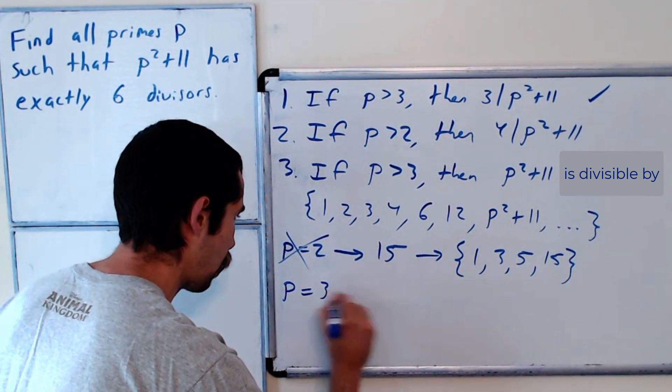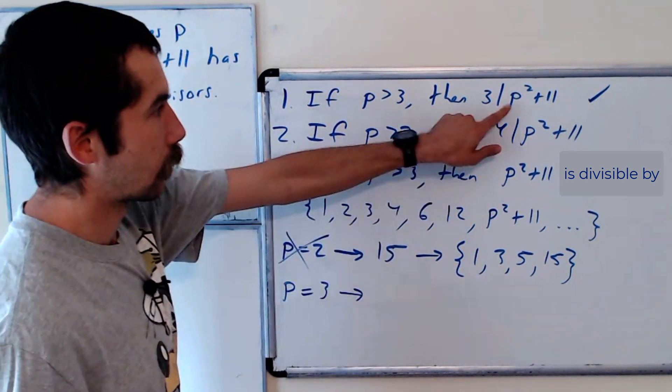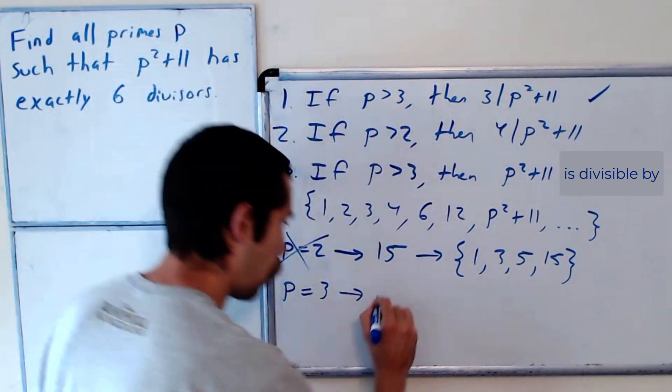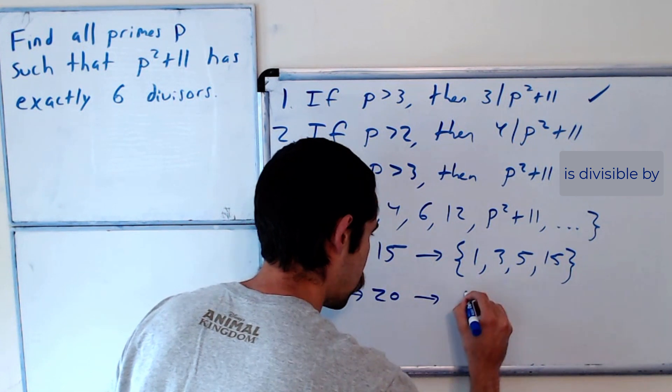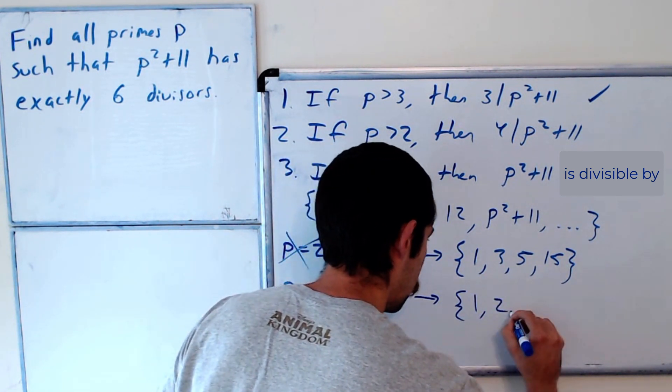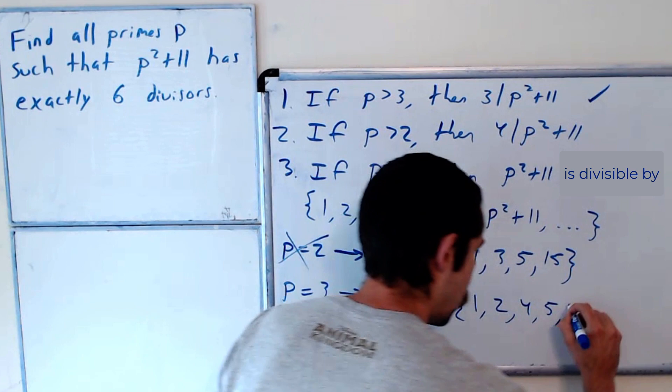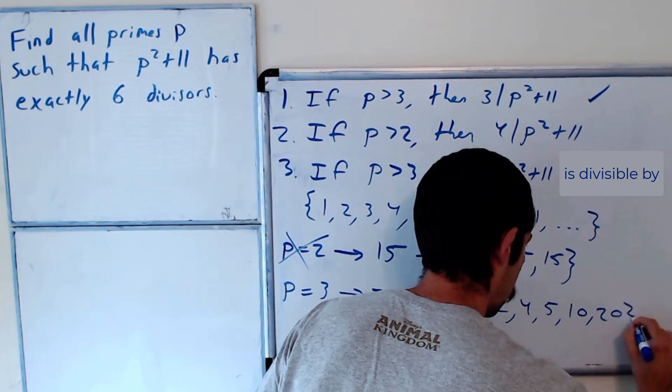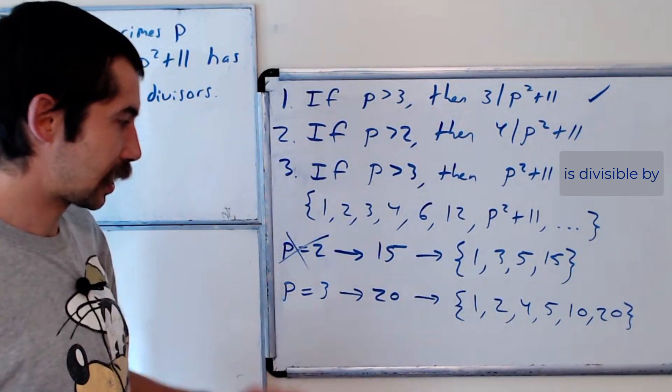What about what if p equals 3? There might be no solution. Let's check. 9 plus 11 is 20. The divisors of 20 are 1, 2, 4, 5, 10, and 20. And that's 6 of them.